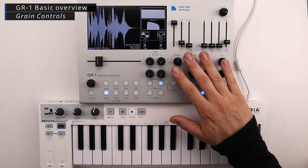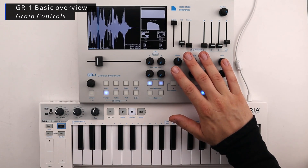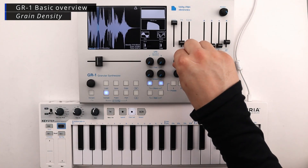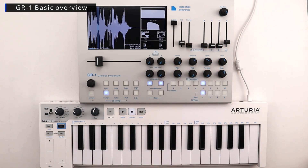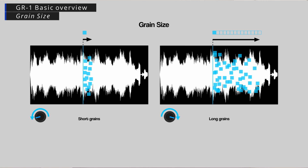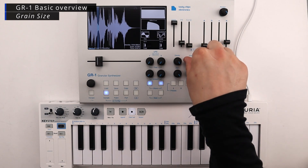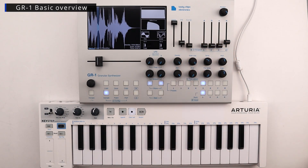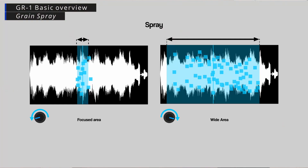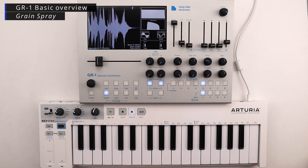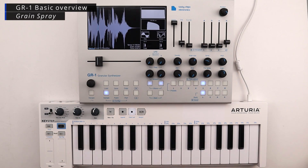Above the preset section we have the grain controls to adjust all the properties of the granular output. The density parameter controls the launch speed in hertz, or the number of grains per second. The maximum frequency of grains is 1024 grains per second. The grain size parameter adjusts the length of a grain in milliseconds. The minimum grain size is 5 milliseconds and the maximum grain size is 5004 milliseconds, or roughly 5 seconds. The spray parameter controls the width of the area in which grains are launched from a certain position. Spray can be centered around the start position which focuses all the grains on top of each other, or spray can be widespread so grains will be launched in a randomized spraying pattern.